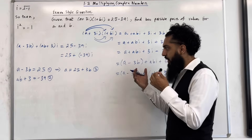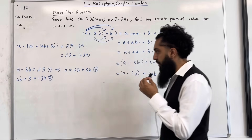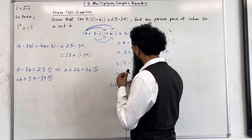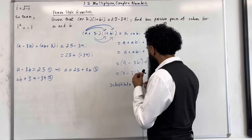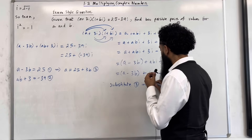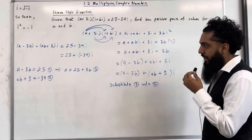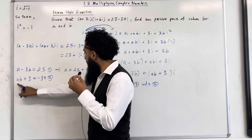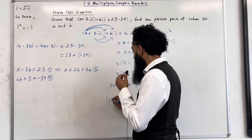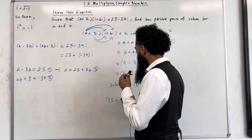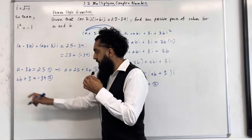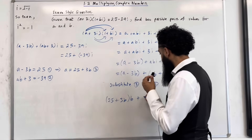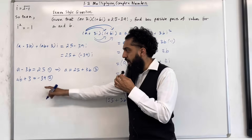Now I can substitute equation 3 into equation 2. Substituting 3 into 2: replace the a with (25 plus 3b), multiplied by b, plus 3 equals minus 39.